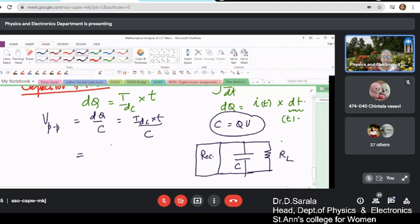So voltage drop across this is the current. So i_dc into t by R_L. So this i_dc can be written as voltage drop. Where is the voltage drop? Voltage is dropped across the resistor.